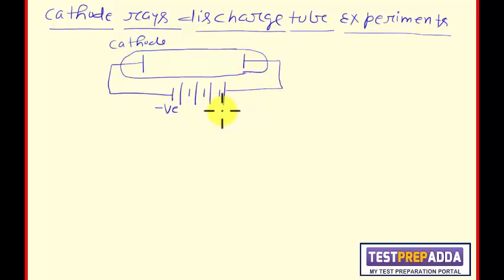The electrode which was attached with the negative pole of the battery was a cathode. The electrode which was attached with the positive pole of the battery was anode. So gas was taken in the tube and a vacuum pump was attached to control the pressure inside the tube. And the glass tube was coated with fluorescent material like ZnS.